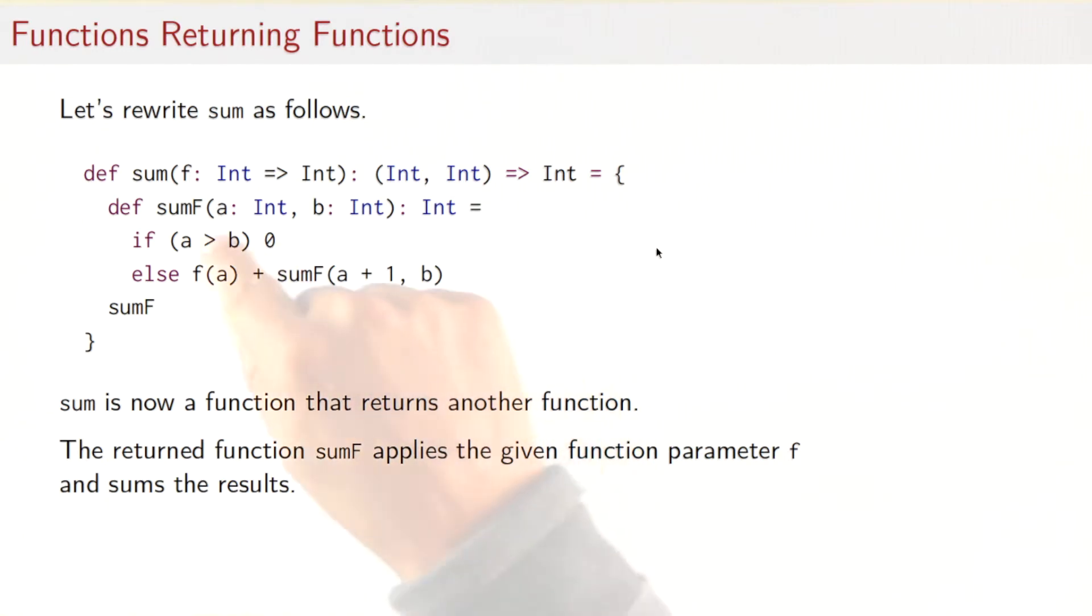Well, it defines a function in this body, sumF, which takes the two bounds and does the usual computation that you've seen before. And that function sumF will be returned from sum. So sum is now a function that returns another function, in particular a locally defined function.